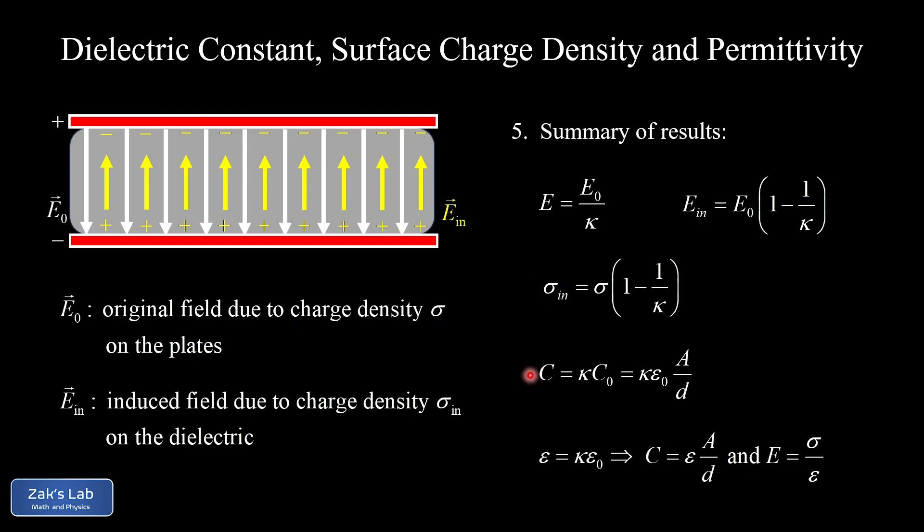We figured out that the presence of a dielectric increases the capacitance by a factor of kappa, giving kappa times C0 — or substituting in the geometry, kappa times epsilon_0 times A over d. Finally, as a stylistic decision, we replace kappa epsilon_0 with epsilon, called the permittivity of that particular dielectric material.